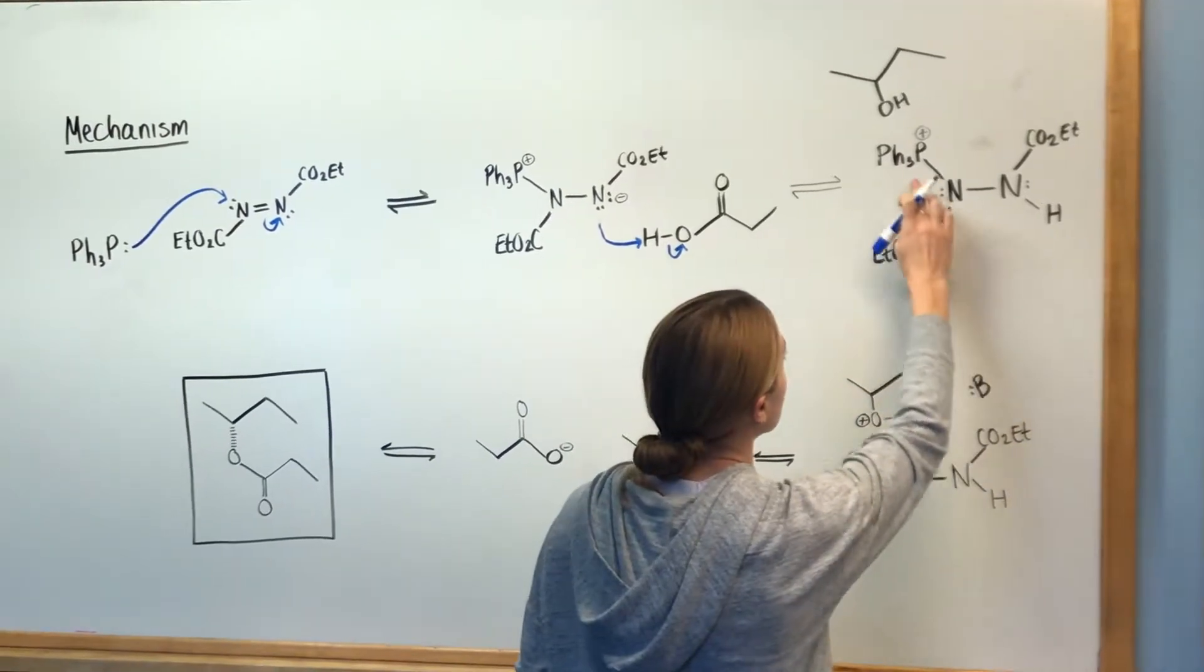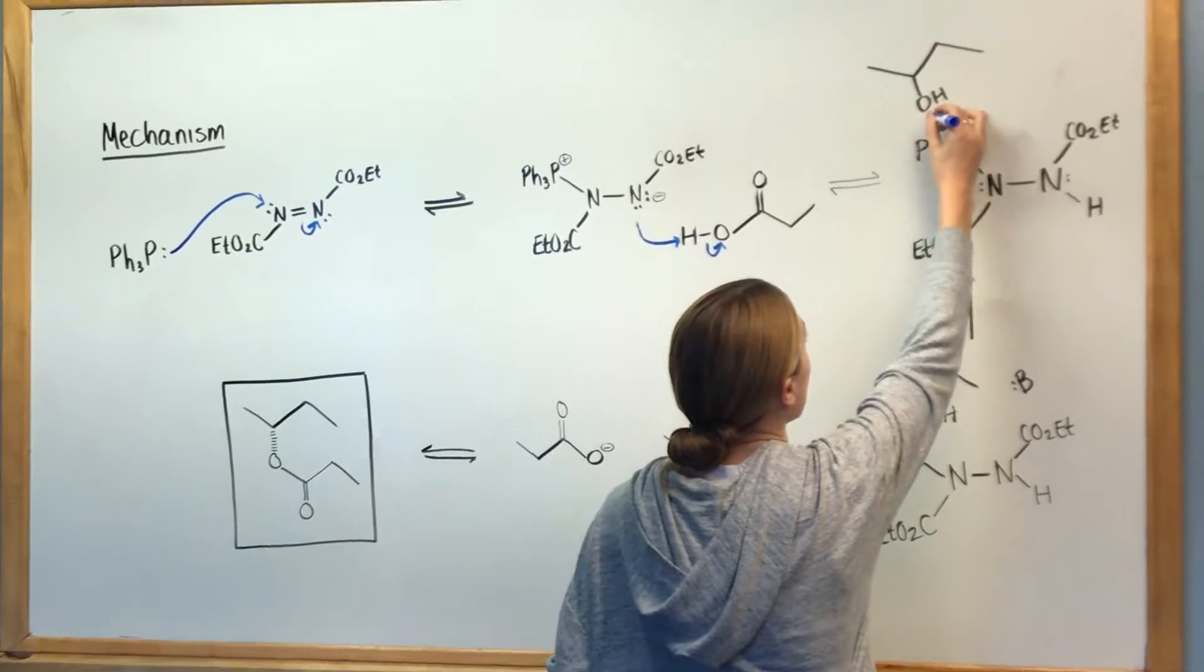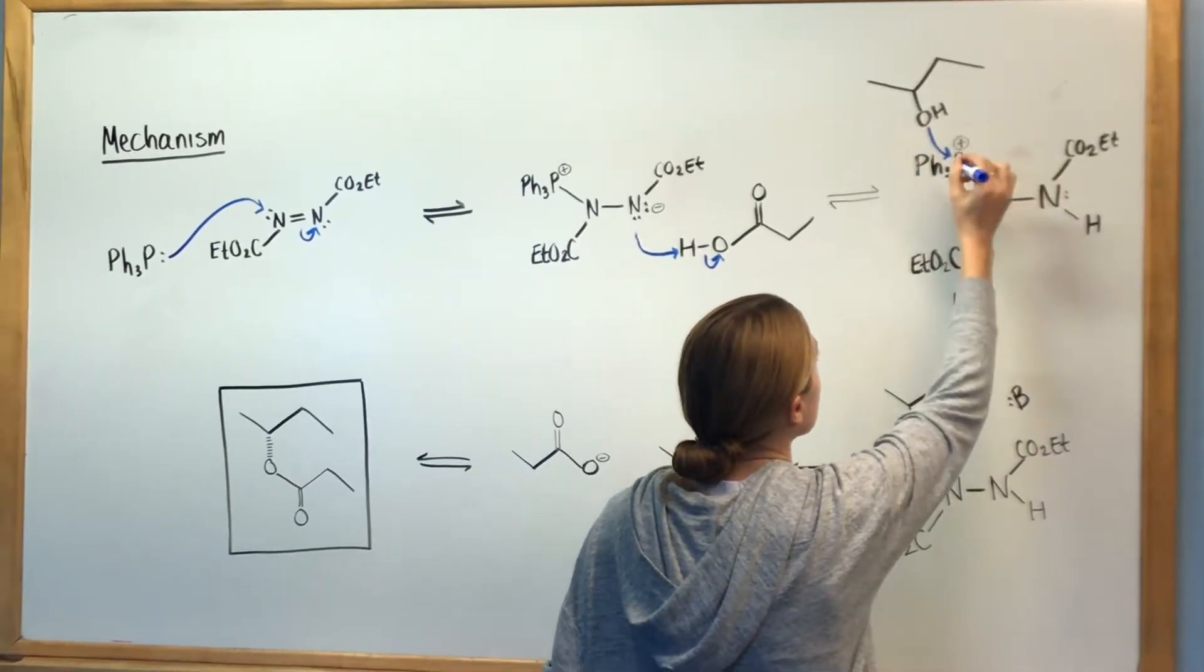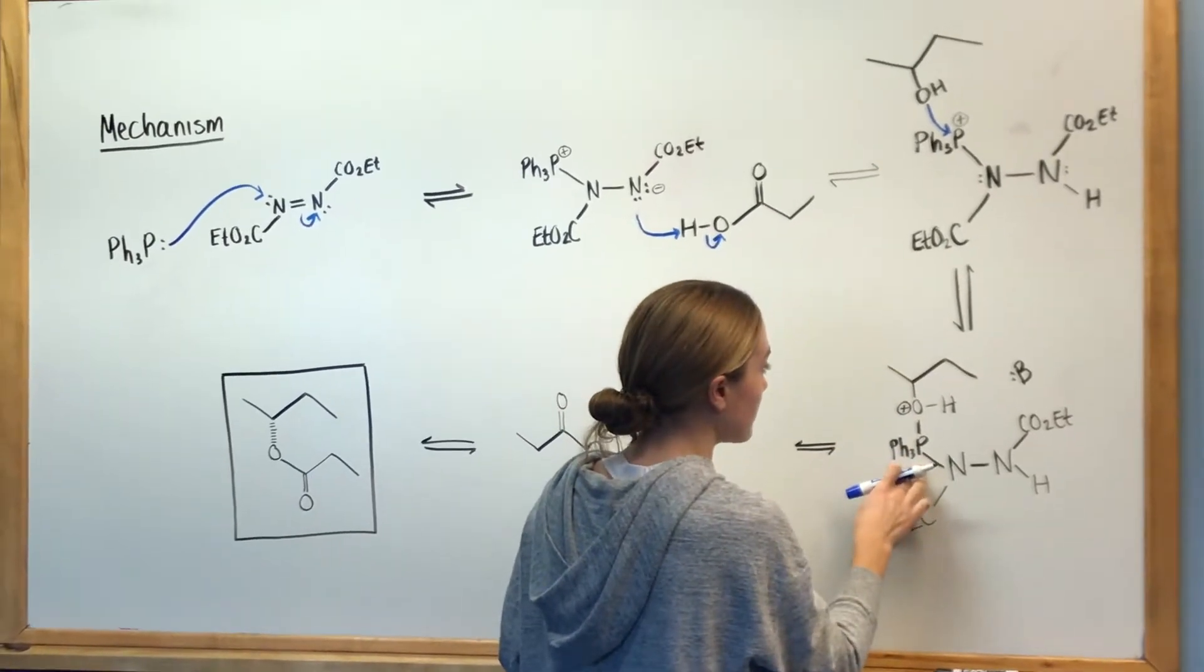Now we have this molecule with just this one charge up here. This is our second reactant, which is going to attack up here on this phosphorus to get rid of that positive charge, making this oxygen positive. This phosphorus now has five bonds.